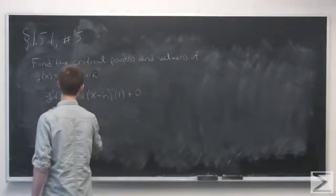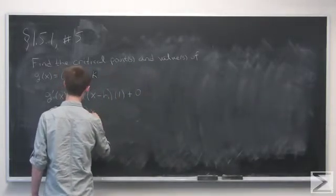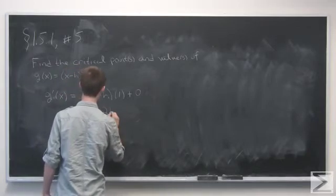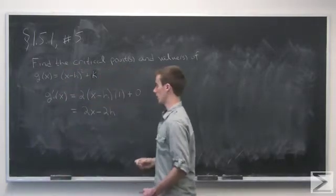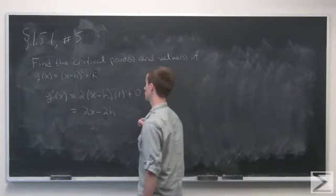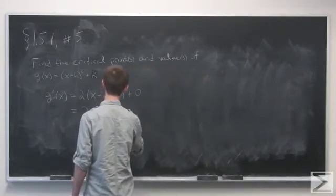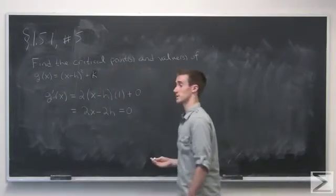So this simplifies to 2x - 2h. Now we want to set this equal to 0, so g'(x) = 0.